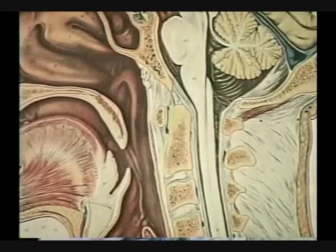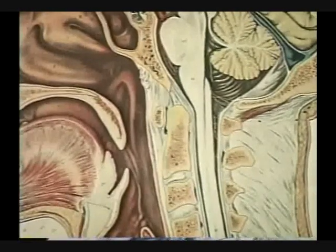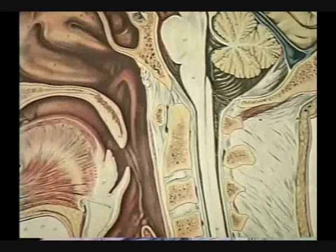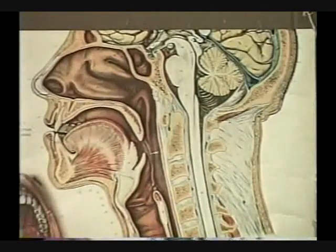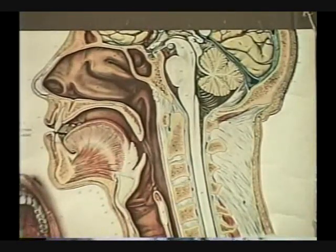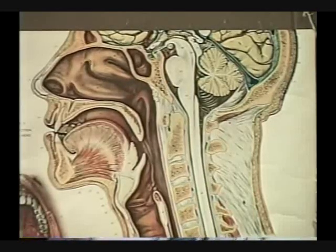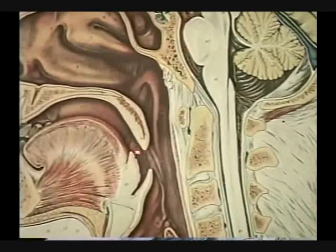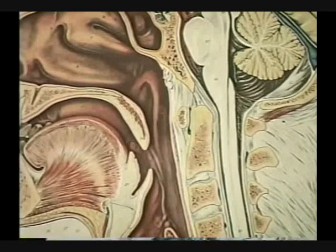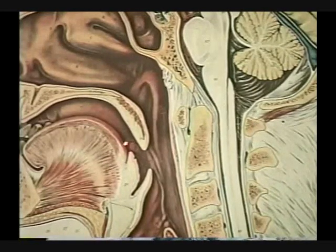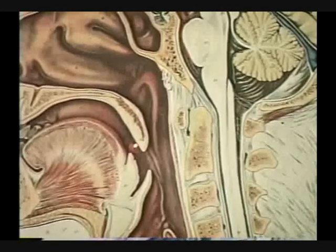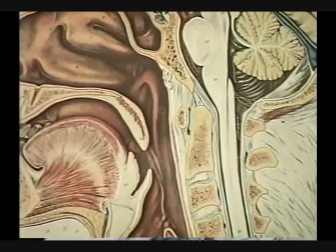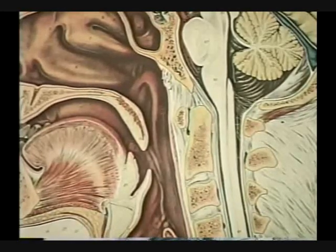Looking at the section of the head, something really important in the lymphoid tissues are the tonsils. We have tonsils here — these are the ones you see looking straight into the mouth. These are your palatine tonsils; you have two of them, one on each side of the back of your oral cavity.